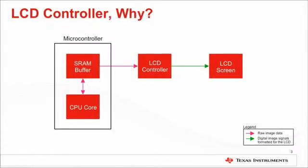Let us take a look at a very basic system with the LCD controller, a microcontroller, and an LCD screen. In such a system, the raw image data is stored in a buffer in the SRAM. The LCD controller reads the data from the image buffer, translates it into a format that the LCD screen can display, and sends it to the LCD screen with correct signal timings such that the desired image is displayed correctly. The end goal in such a system is to display the image on the external LCD screen.